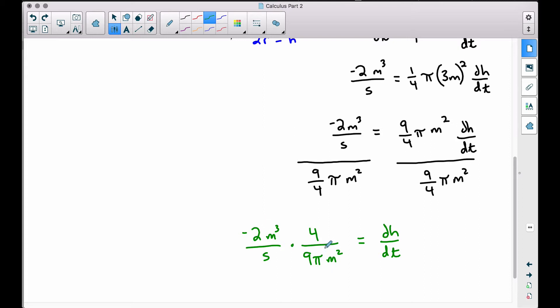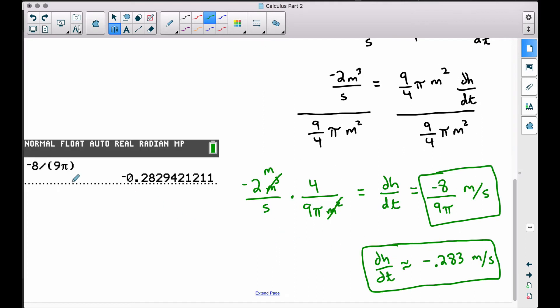This is going to be dh/dt and we can do some canceling out of variables, cubic meters over square meters. We get completely rid of the square meters at the bottom, leaving us with just a plain old meter at the top. And this is going to be equal to negative eight meters over nine pi, and notice we have our seconds at the bottom. So we have meters per second. This is our exact answer, and the reason why it's negative is because the height, the depth of the water is getting lower. And getting a decimal approximation here, negative eight divided by nine pi is approximately negative 0.283 meters per second.